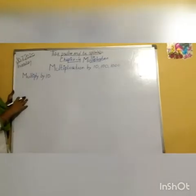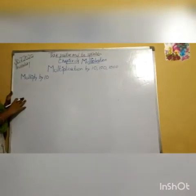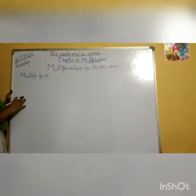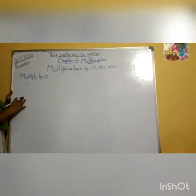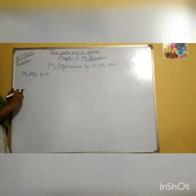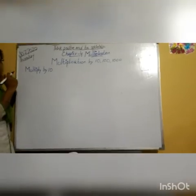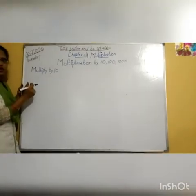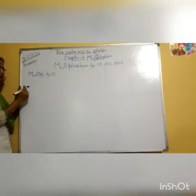Whenever we multiply any digit by 10, just add one zero to the extreme right of the digit.